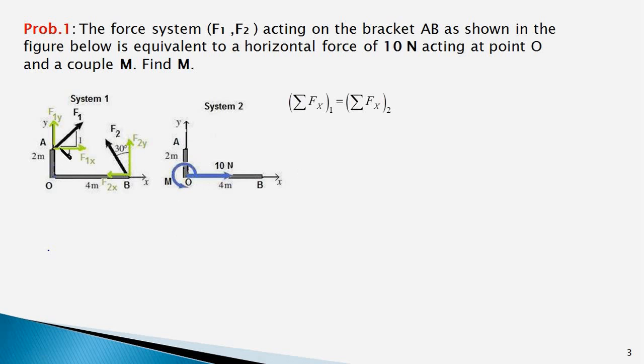Now we break up the forces into their components. Here, F1 is with a slope of 1 over 1. So this side of the triangle would be root 2 and therefore F1x would be F1 times 1 upon root 2 and F2x is in minus x direction. Therefore F2x would be minus F2 sine 30. So our equation would be F1 times 1 upon root 2 minus F2 sine 30 and will be equal to 10 newtons which is a single force in system 2.